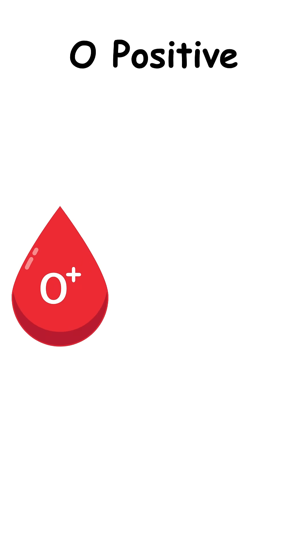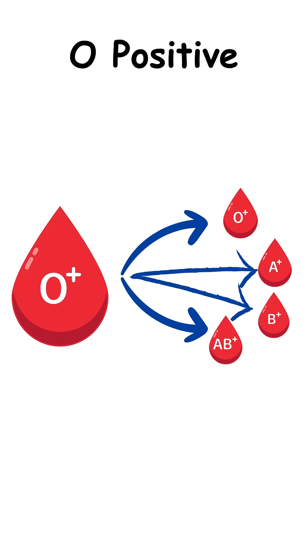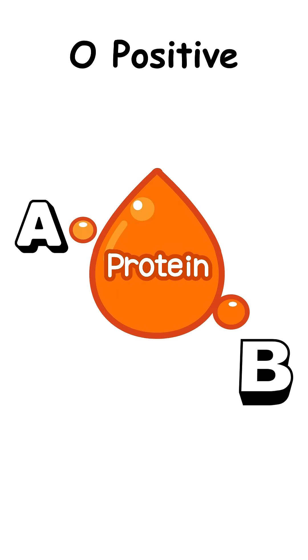Your blood is like the ultimate team player. It can donate to any positive blood type—O+, A+, B+, AB+—because it doesn't have those AB proteins that might cause drama in other people's bodies.